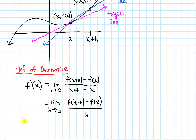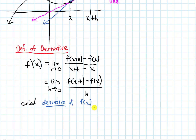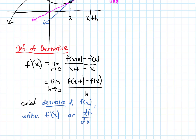This is called the derivative of f of x. Our notation for it is f prime of x. The other way it's sometimes written is df dx, which resembles a change in the function over the change in x — like a slope formula. That's what's motivating that notation.